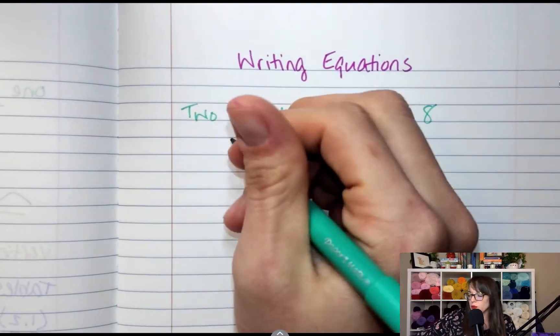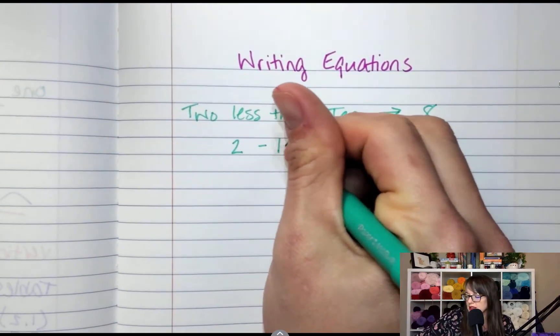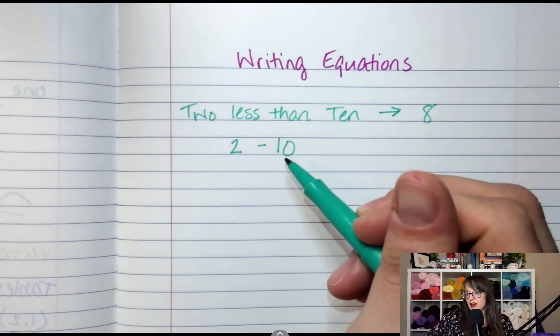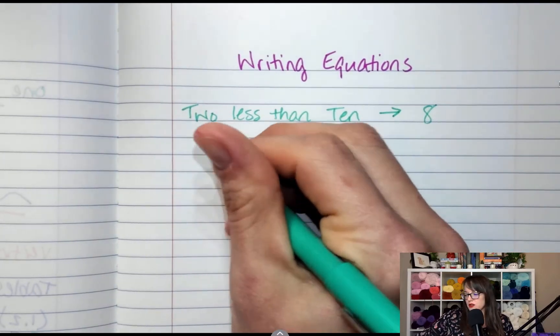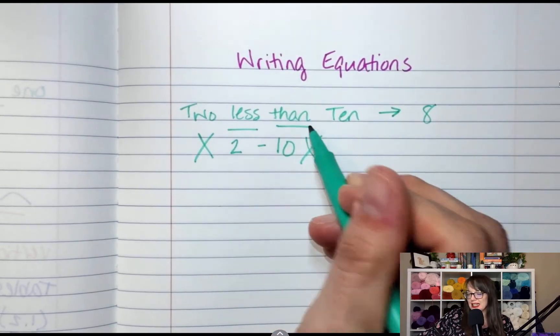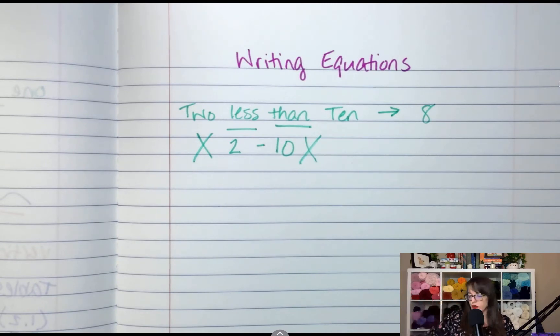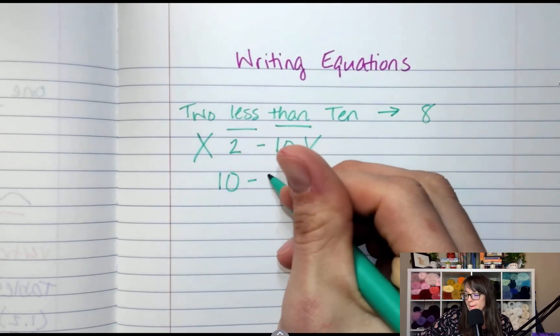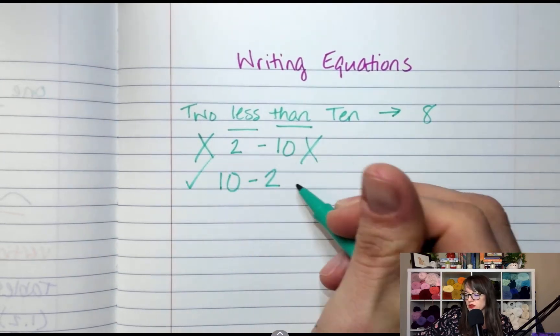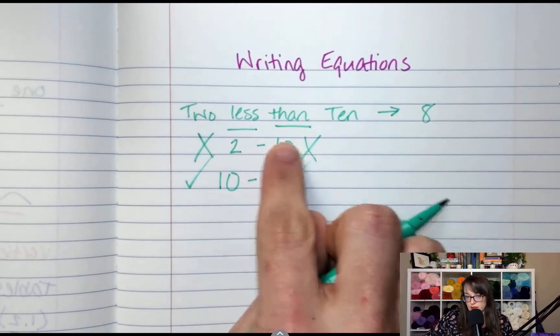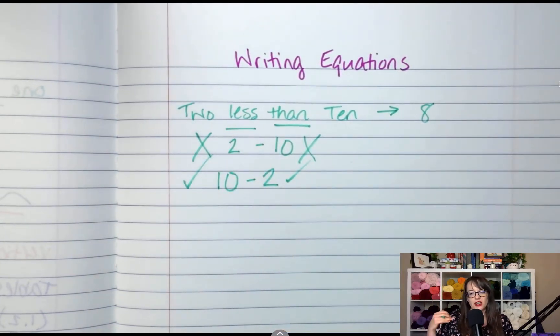But how many of you would write it 2 minus 10? This is not how you would write this. Don't do it this way. So when you see less than, you have to flip the order. So 2 less than 10 is going to be written 10 minus 2. Good, bad. Don't do it this way. Do it this way. And think logically when you're getting your answers.